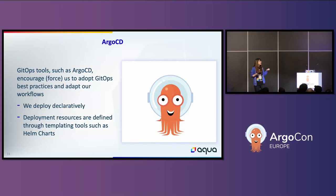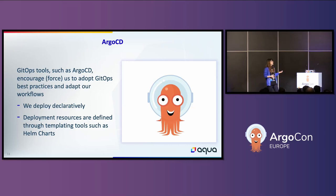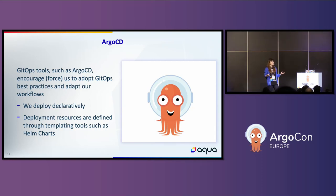ArgoCD has several benefits. It helps us adopt GitOps best practices and define our resources more declaratively — meaning through code, we define what should be deployed, how it should be deployed, and where it should be deployed. It also helps us adopt Kubernetes best practices. For example, if your application is larger, you might want to use a tool such as Helm charts to template that application. With ArgoCD CRDs — custom resource definitions in Kubernetes — you can easily define how, for example, Helm charts should be deployed.